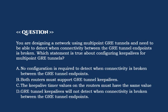Option A: No configuration is required to detect when connectivity is broken between the GRE tunnel endpoints. Option B: Both routers must support GRE tunnel keep-alives. Option C: The keep-alive timer values on the routers must have the same value. Option D: GRE tunnel keep-alives will not detect when connectivity is broken between the GRE tunnel endpoints.